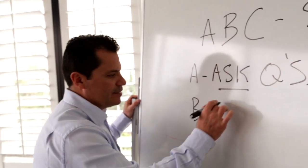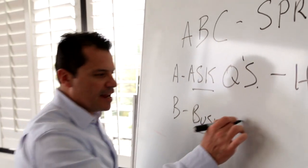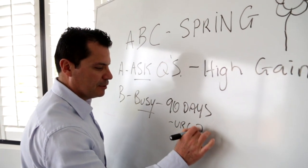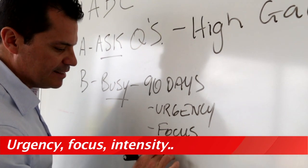The B is busy. Busy over the next 90 days, you need to be working like this: urgency, focus, and intensity.